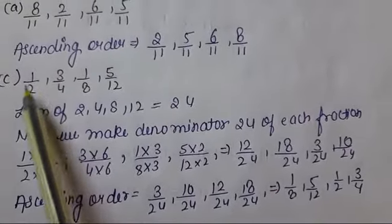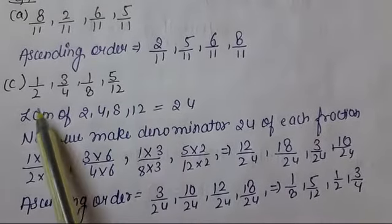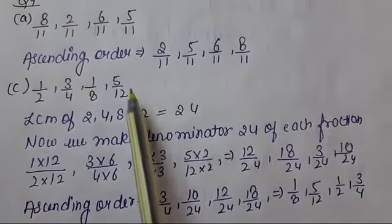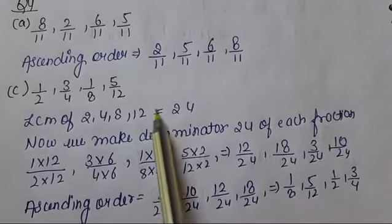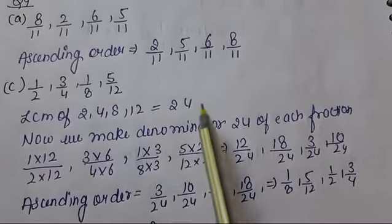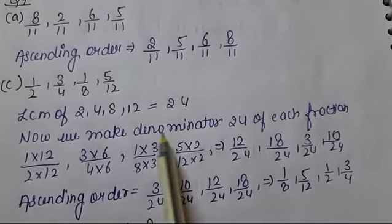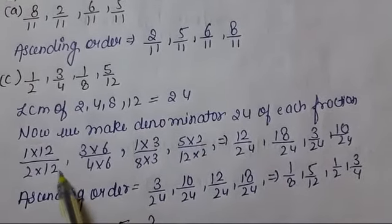Question number C: 1 upon 2, 3 upon 4, 1 upon 8, and 5 upon 12. These denominators are different, so we take the LCM of 2, 4, 8, and 12. The LCM is 24. Now we make the denominator 24.